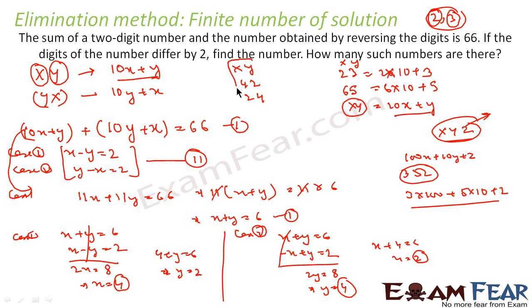So there are two solutions: 42 or 24. If you take 42 and reverse it, you get 24; adding them gives 66. If you take 24 and reverse it, you get 42; adding gives 66. The problem did not specify which digit is greater, so both cases are valid, giving two such numbers: 42 and 24.